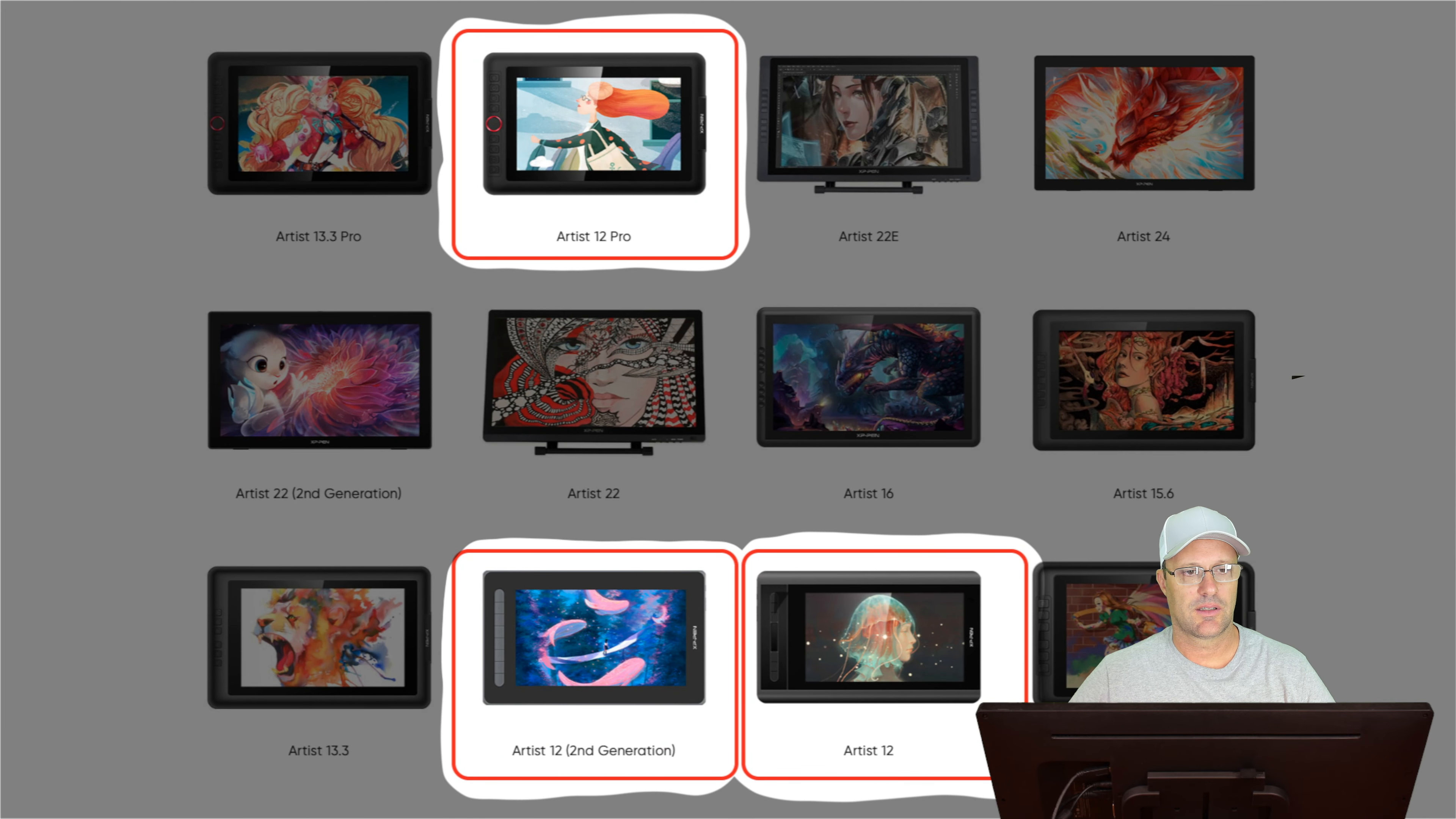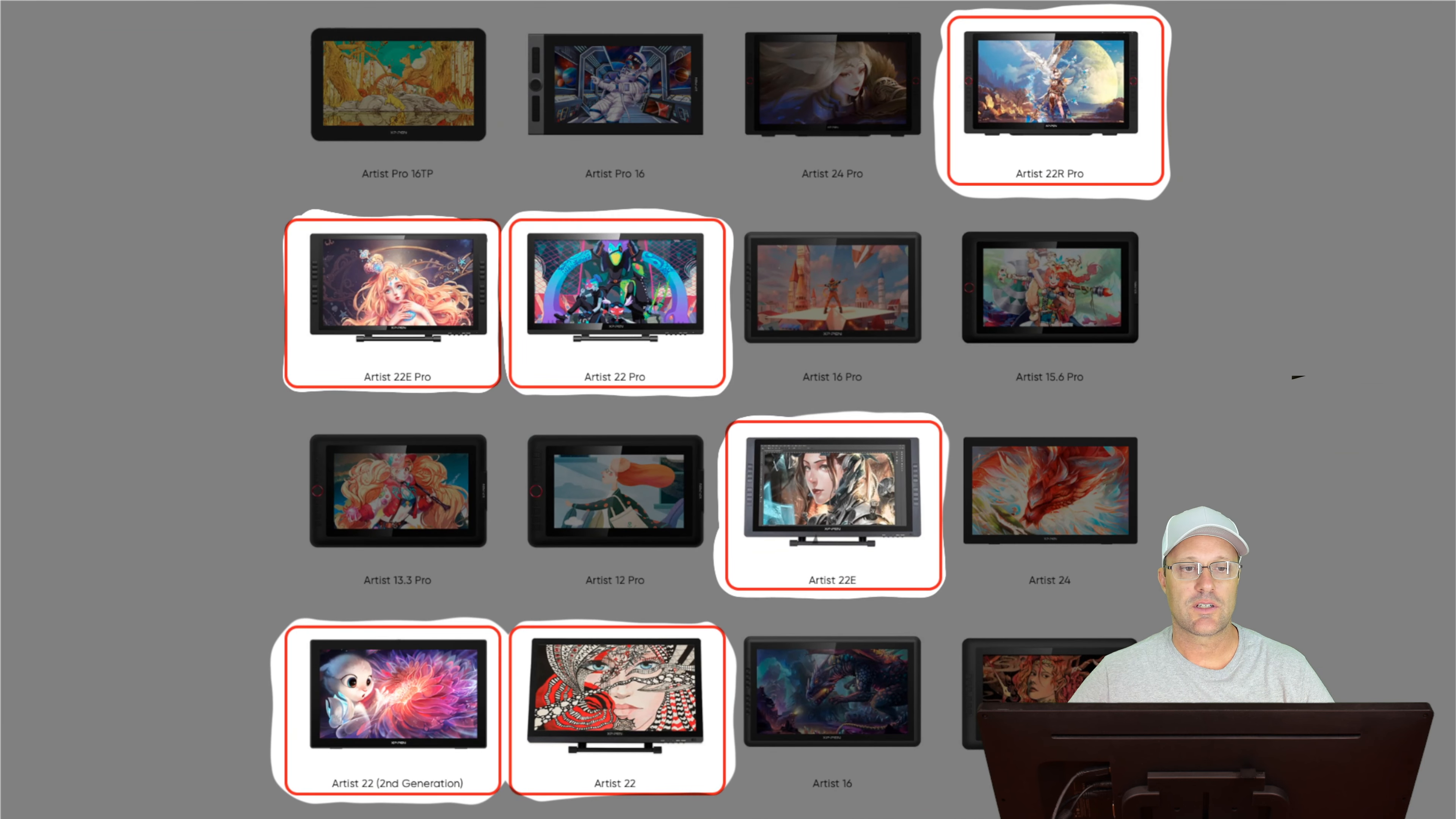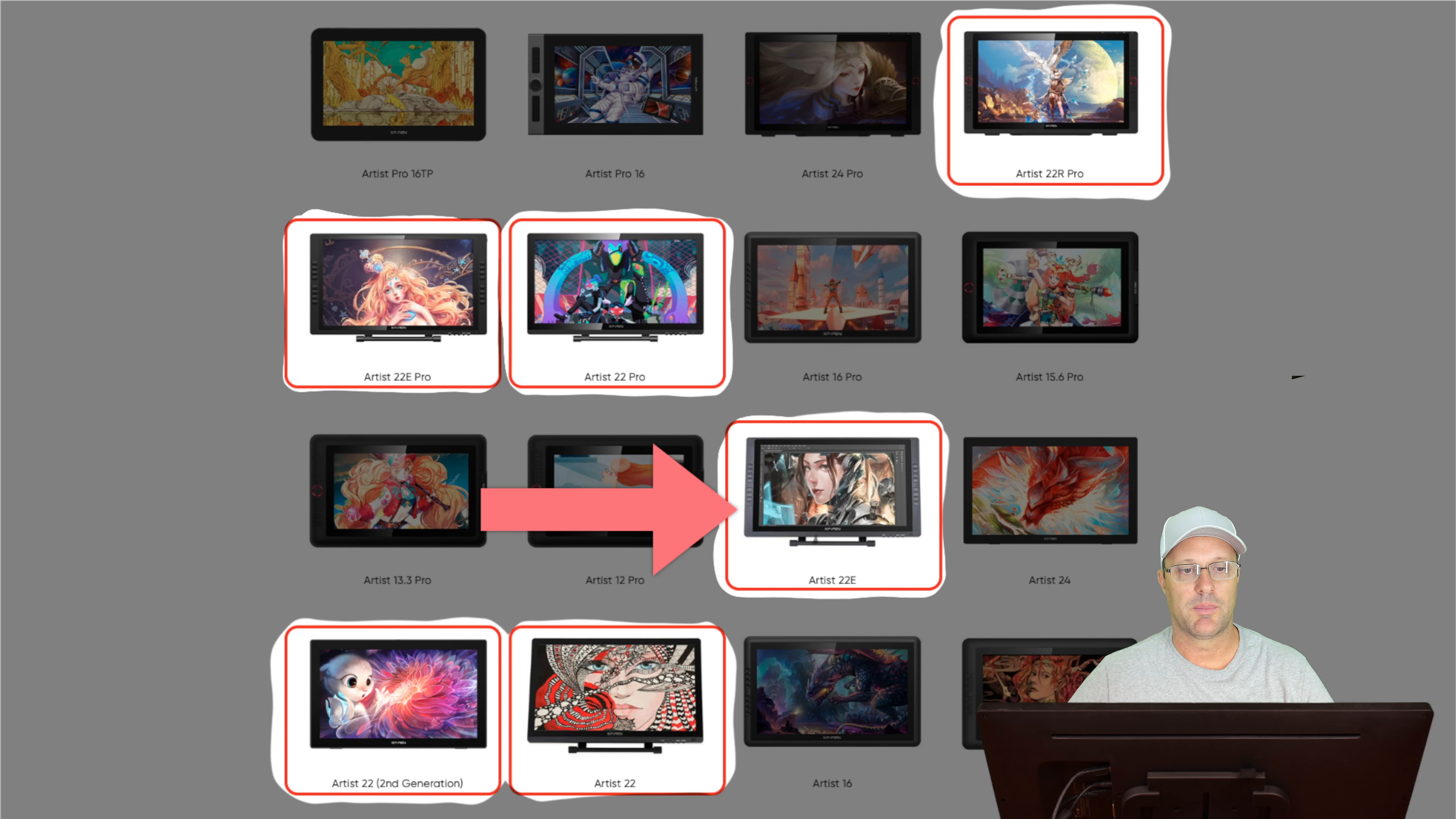Before I get going here, there's three different 12 inch models that XP-Pen makes, and today I'm going to be specifically talking about the Artist 12 Pro. When you get into the 22 inch models, XP-Pen actually makes six different models. I've got the Artist 22E, which I believe is only the second 22 inch model that they made behind the regular Artist 22.